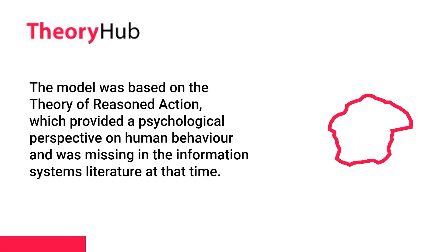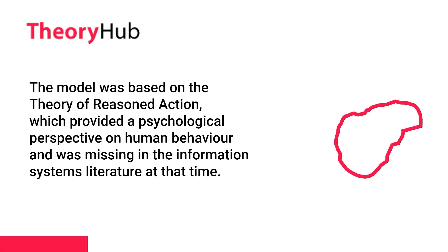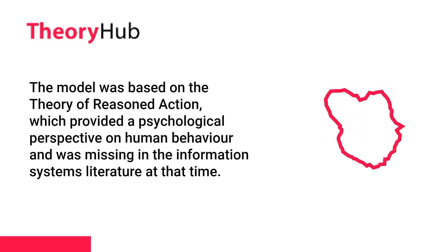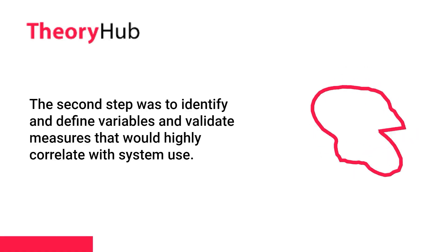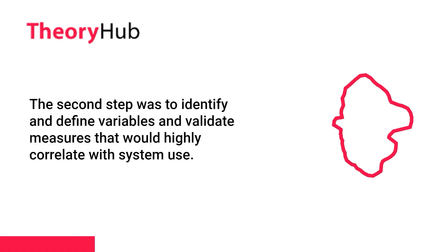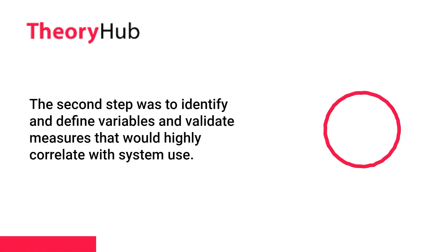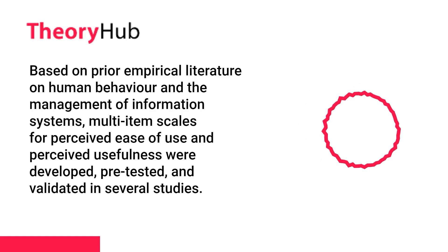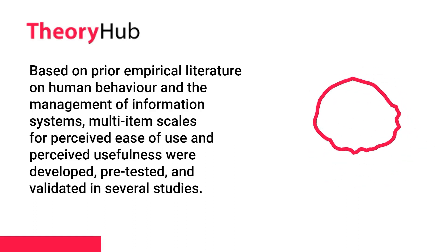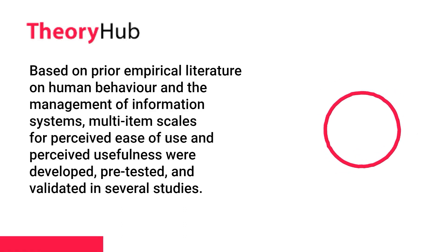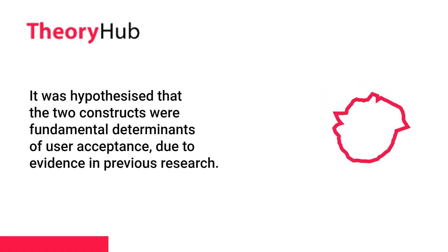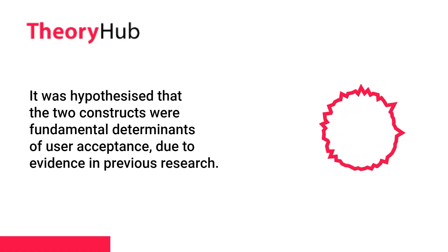The model was based on the theory of reasoned action, which provided a psychological perspective on human behavior that was missing in the information systems literature at that time. The second step was to identify and define variables and validate measures that would highly correlate with system use. Based on prior empirical literature on human behavior and the management of information systems, multi-item scales for perceived ease of use and perceived usefulness were developed, pre-tested, and validated in several studies. It was hypothesized that the two constructs were fundamental determinants of user acceptance, due to evidence in previous research.